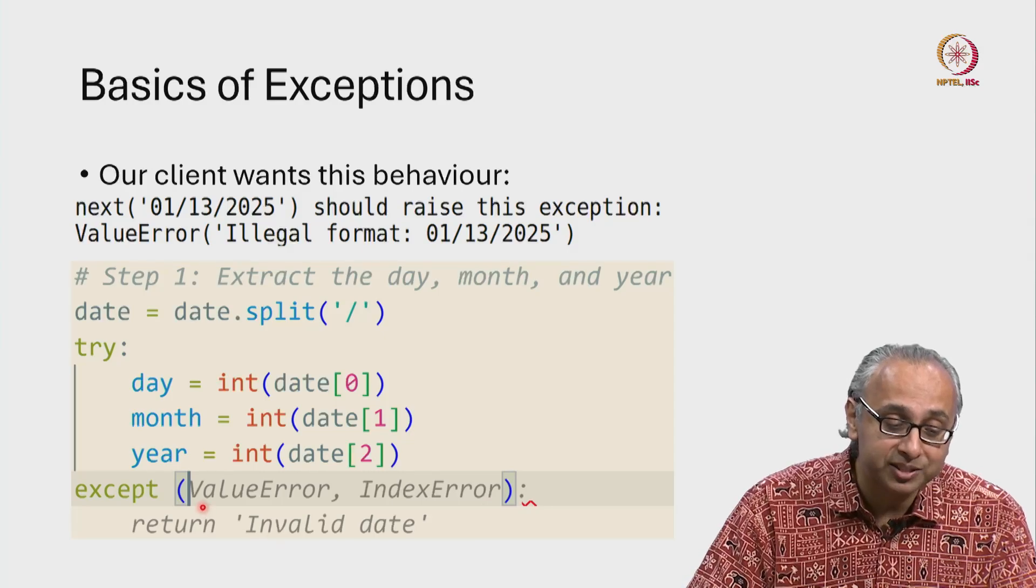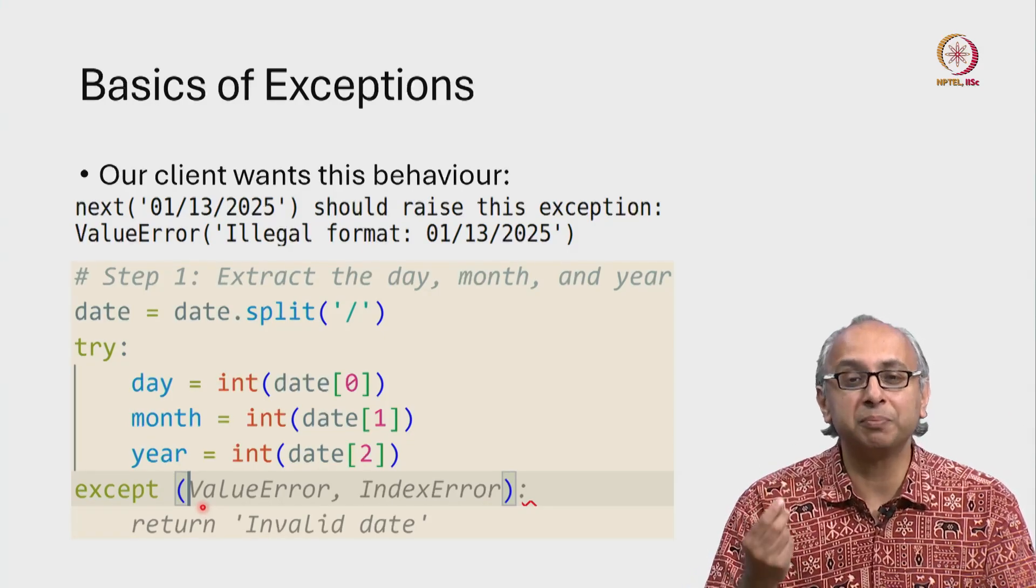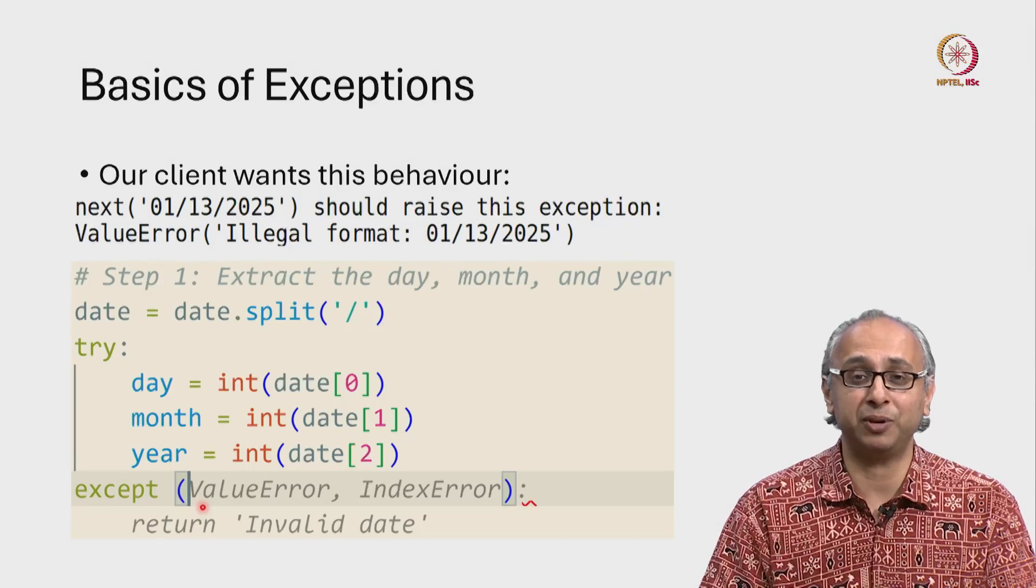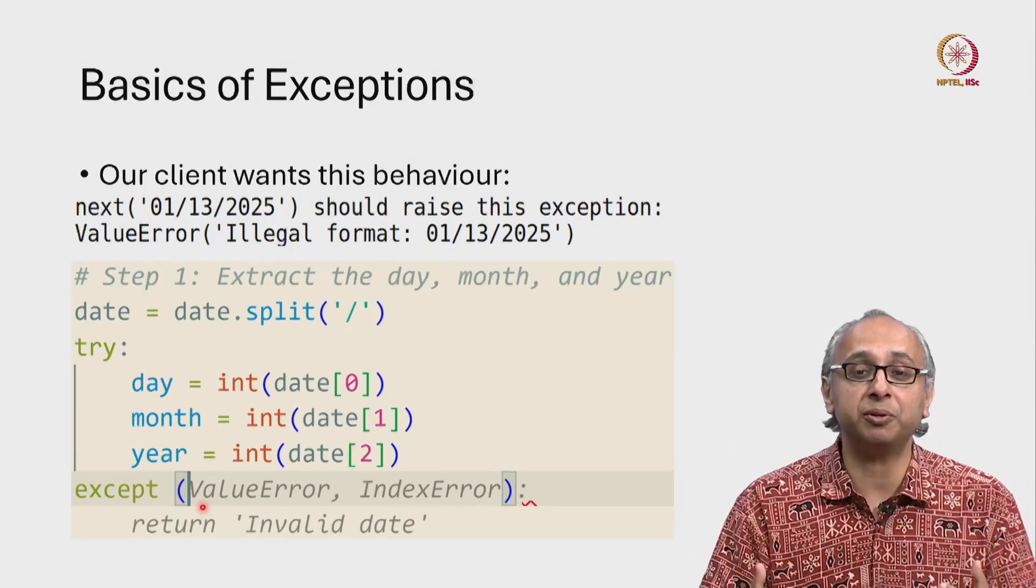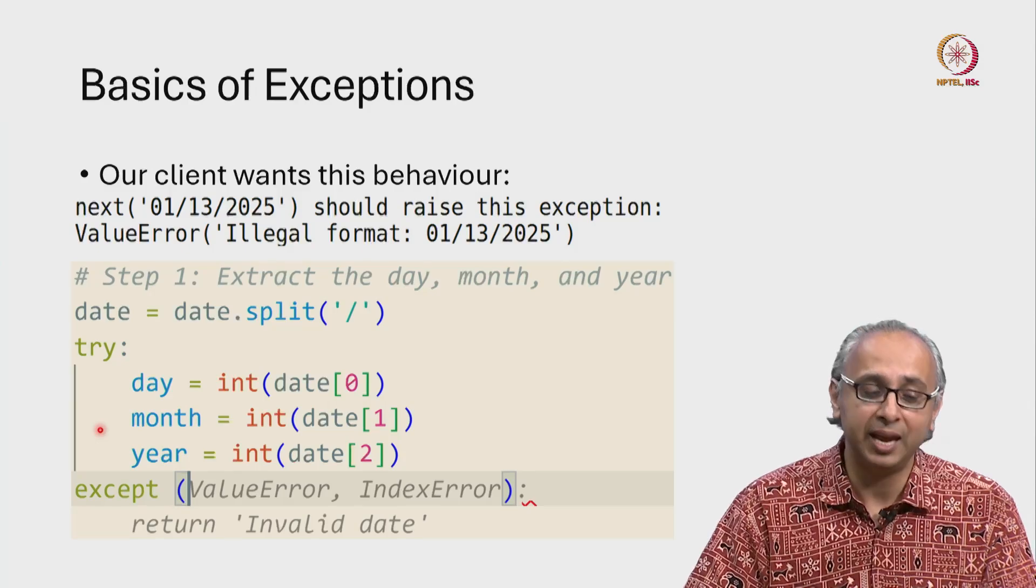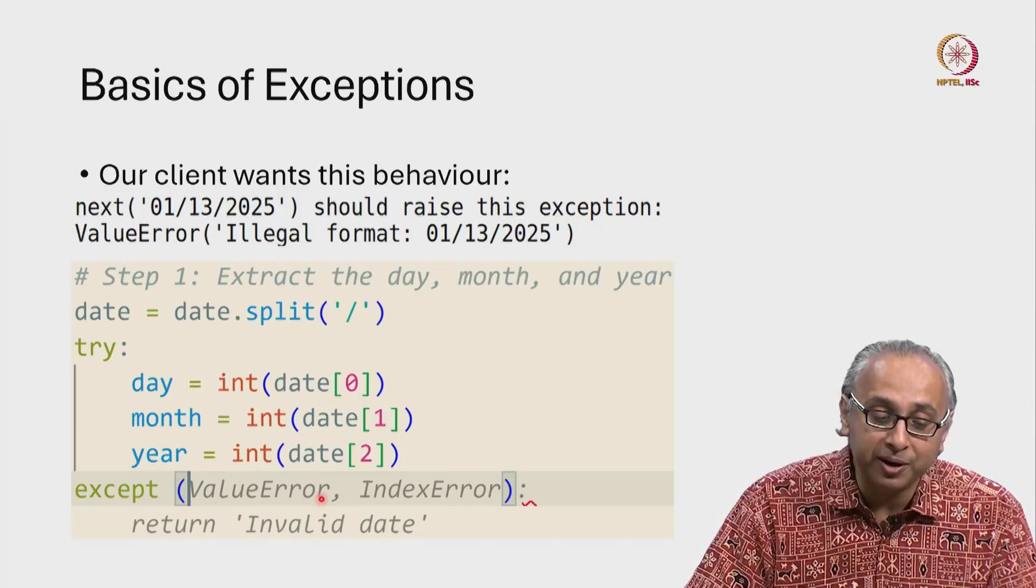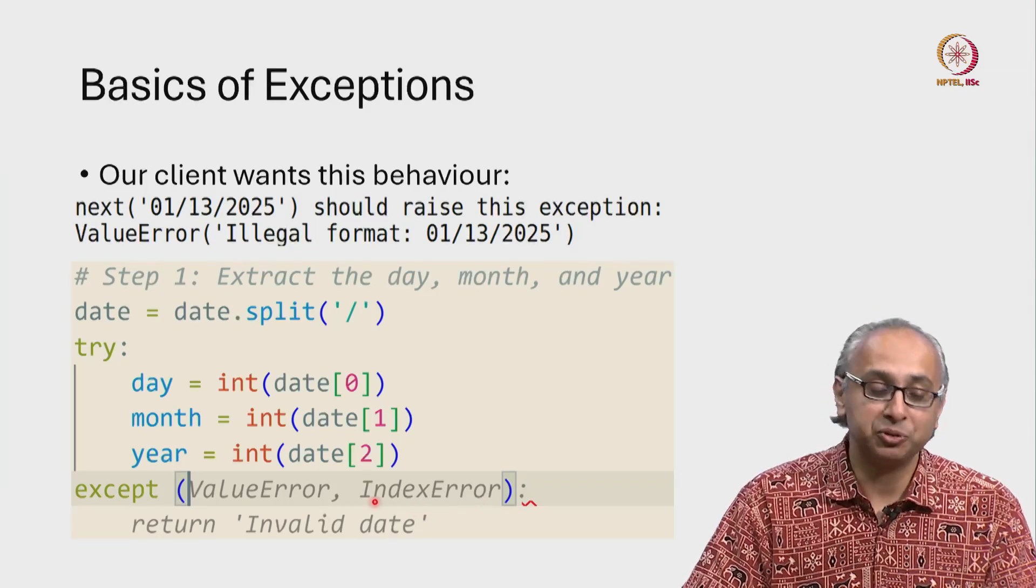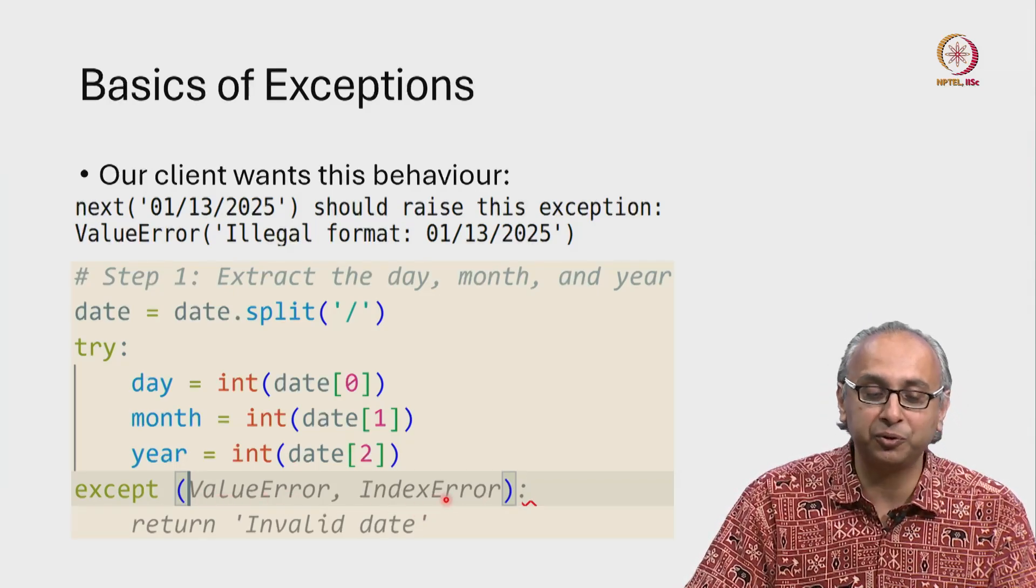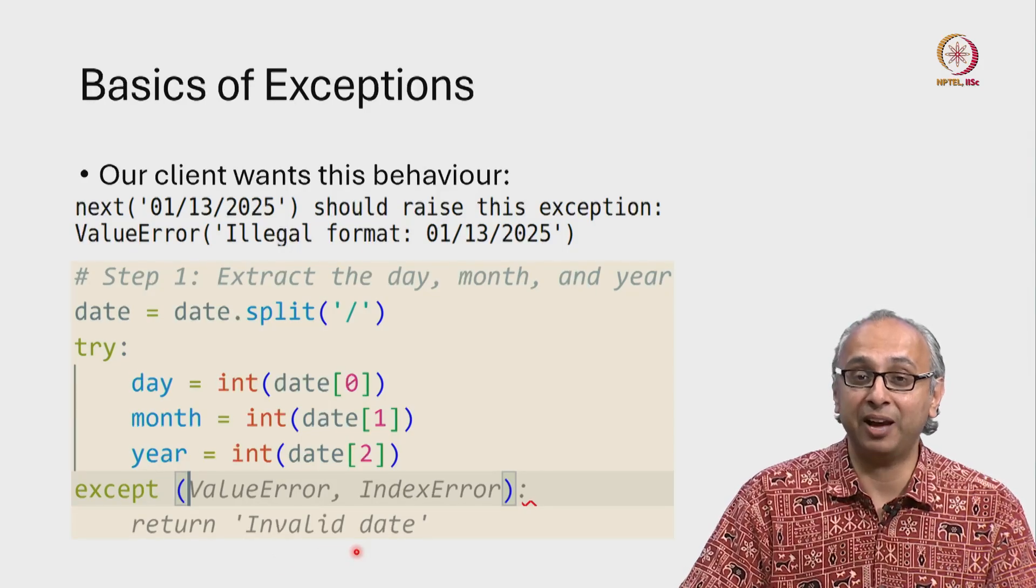But then my generative AI suggests, oh I see, you are talking about the possibility of two types of errors. So this prompts my generative AI to stare at this piece of code a little bit more carefully and does recognize the possibility of both a ValueError and an IndexError. So then it suggests, well in either of those cases, perhaps you want to return a string invalid date.